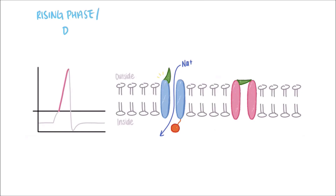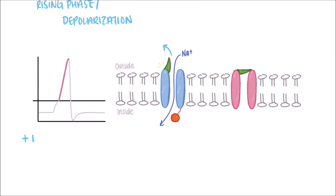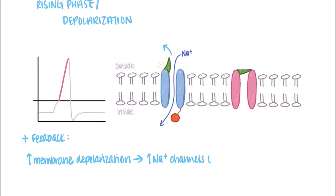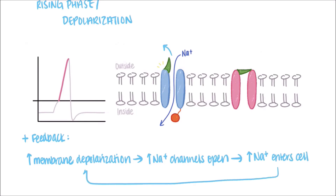At rising phase, or depolarization, all of the sodium activation gates eventually open due to the depolarizing membrane. Here, there is a positive feedback loop: the more the membrane depolarizes, the more sodium channels that open up, which causes more sodium to go into the cell and further depolarize the membrane. The sodium activation gates open very quickly, which aids in the sharp increase in membrane potential. This rapid depolarization can be seen on the voltage graph, where the voltage very quickly ramps up from threshold to about positive 40 millivolts at the top.